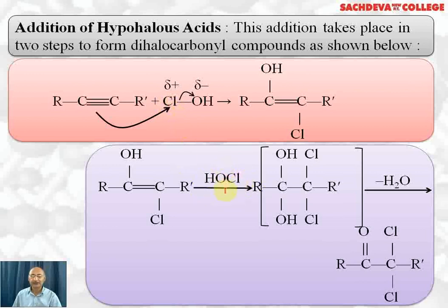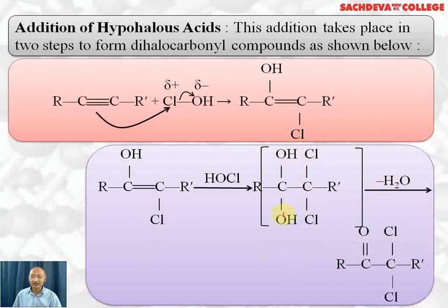In the second step, HOCl is added again, breaking into OH⁻ and Cl⁺. Cl⁺ attacks the same carbon where it attacked earlier, giving two Cl on that carbon, and OH⁻ attaches to the same carbon where it attacked before. Since two OH groups on the same carbon are unstable, one OH and one H are lost as water. A double bond forms, and we obtain dichloroketone as the final product.